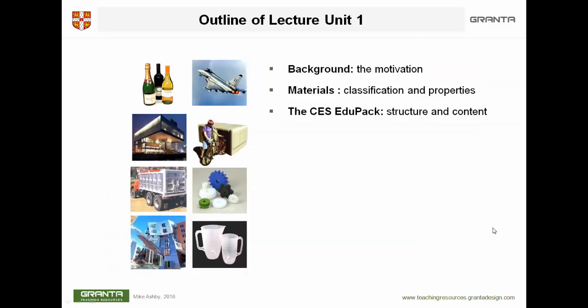Let's move on now to the outline. Very brief — a little bit of background on why we teach materials to engineers at all. Secondly, the classification system for both materials and processes, and then a little introduction to what the software looks like and a start of explaining what you can do with it. Unit 2 and subsequent units enlarge on this and tell you much more about the things you can do with the software.